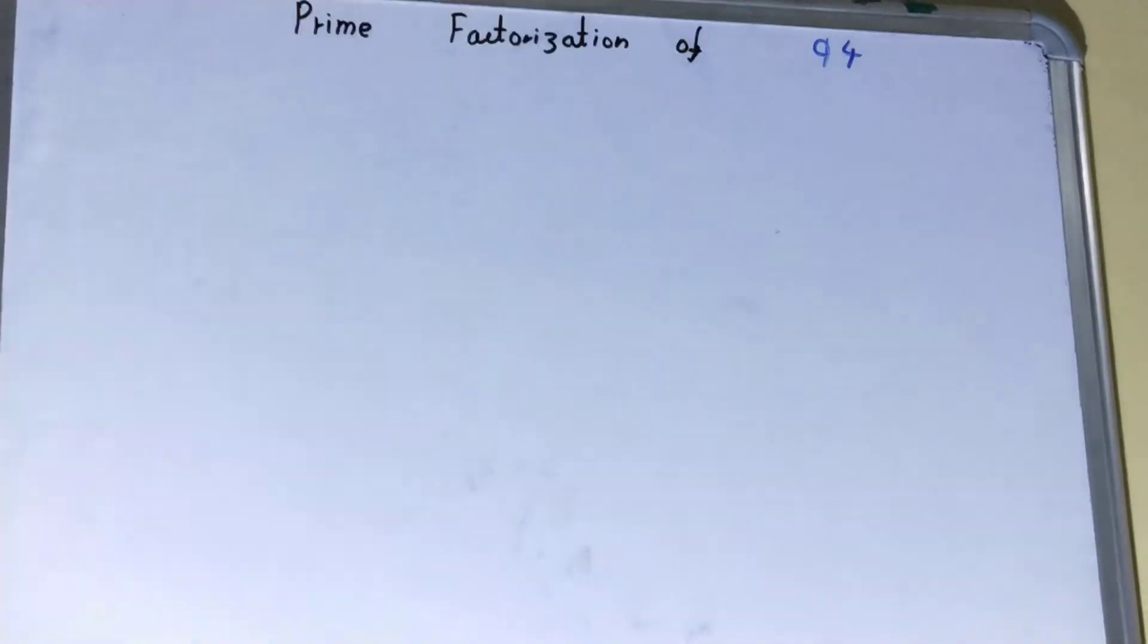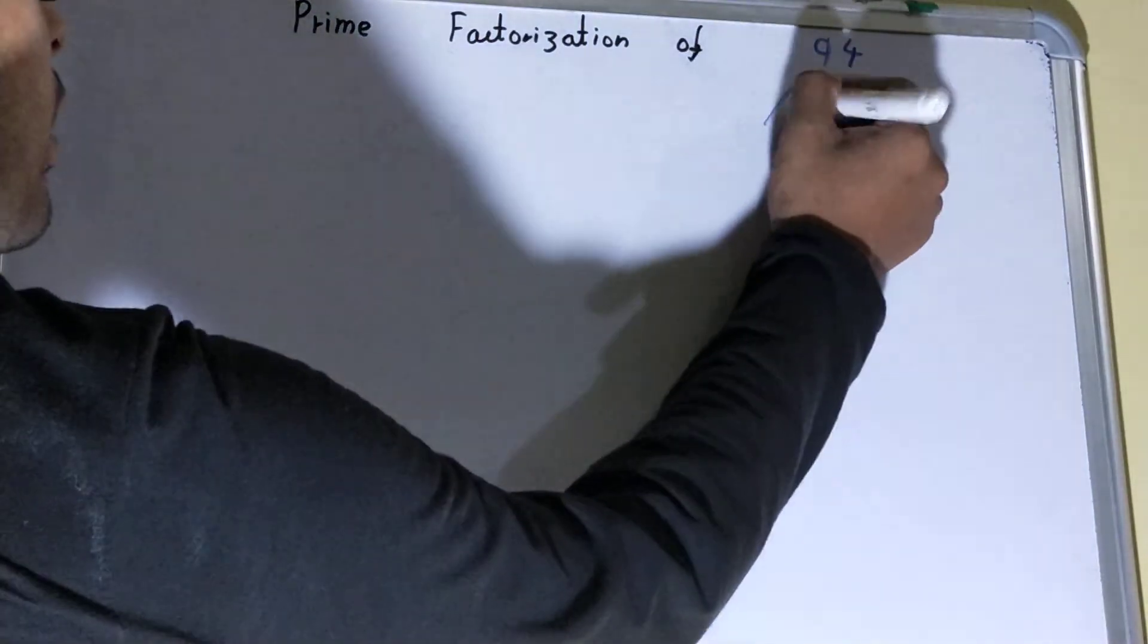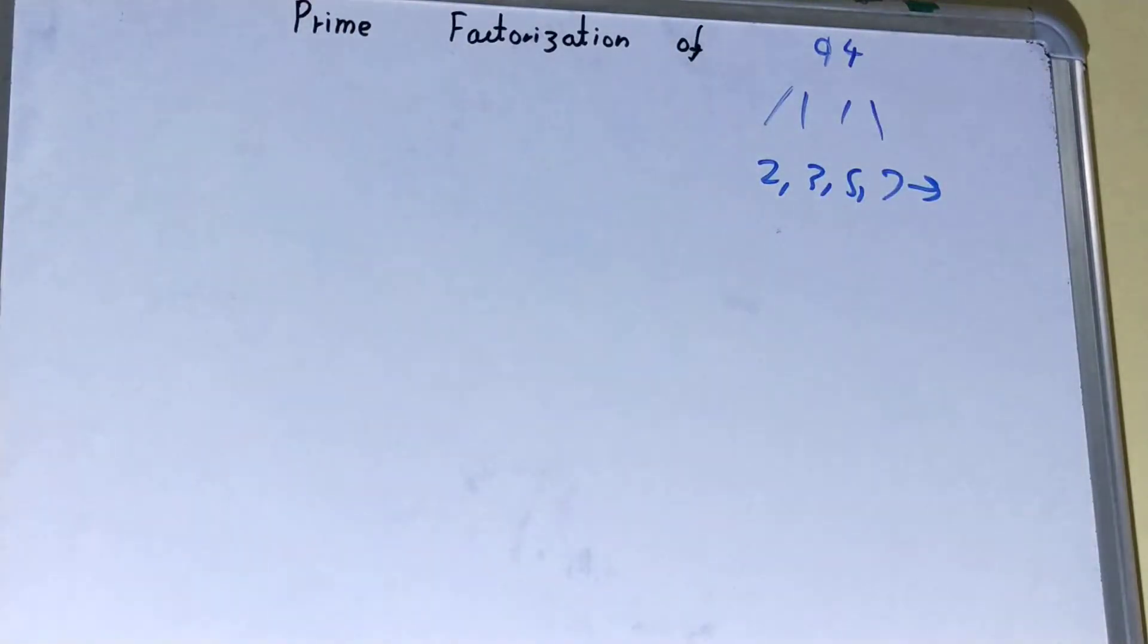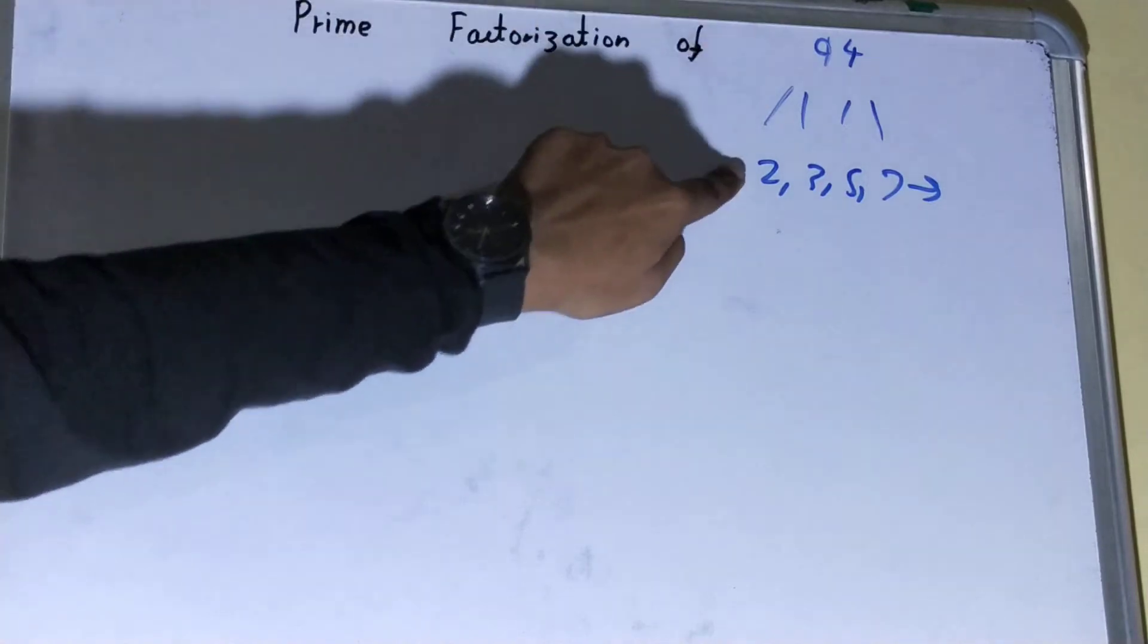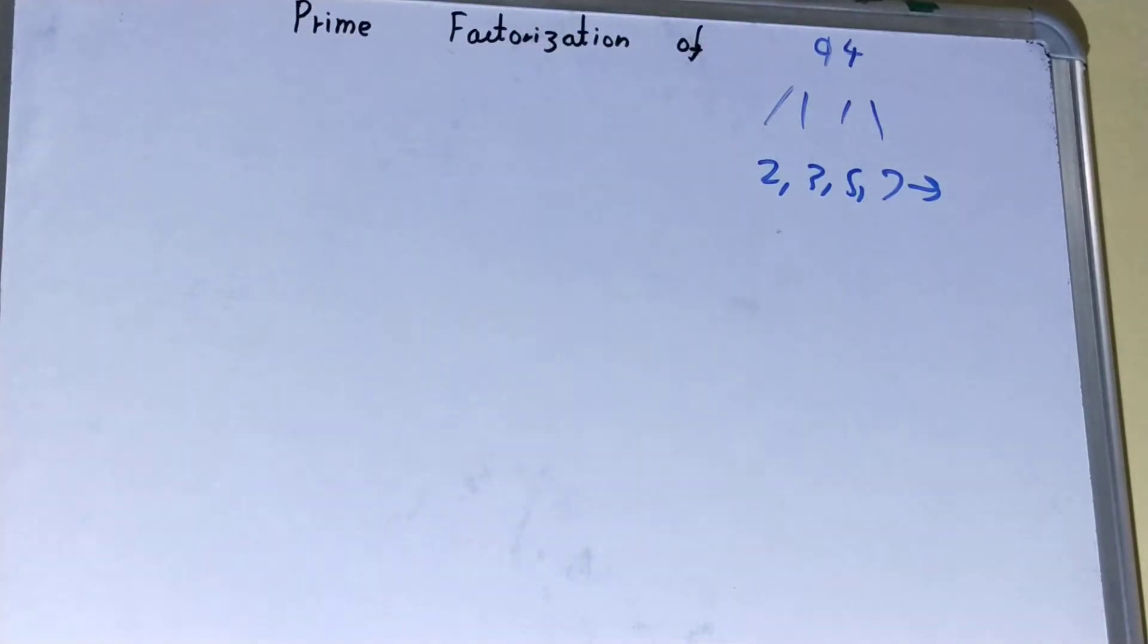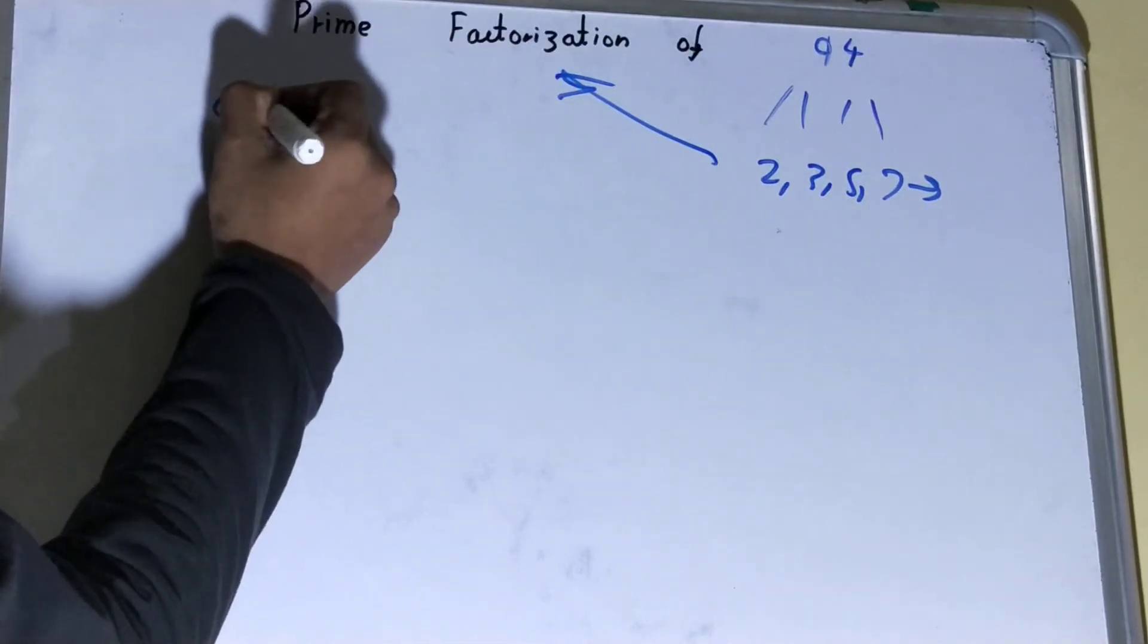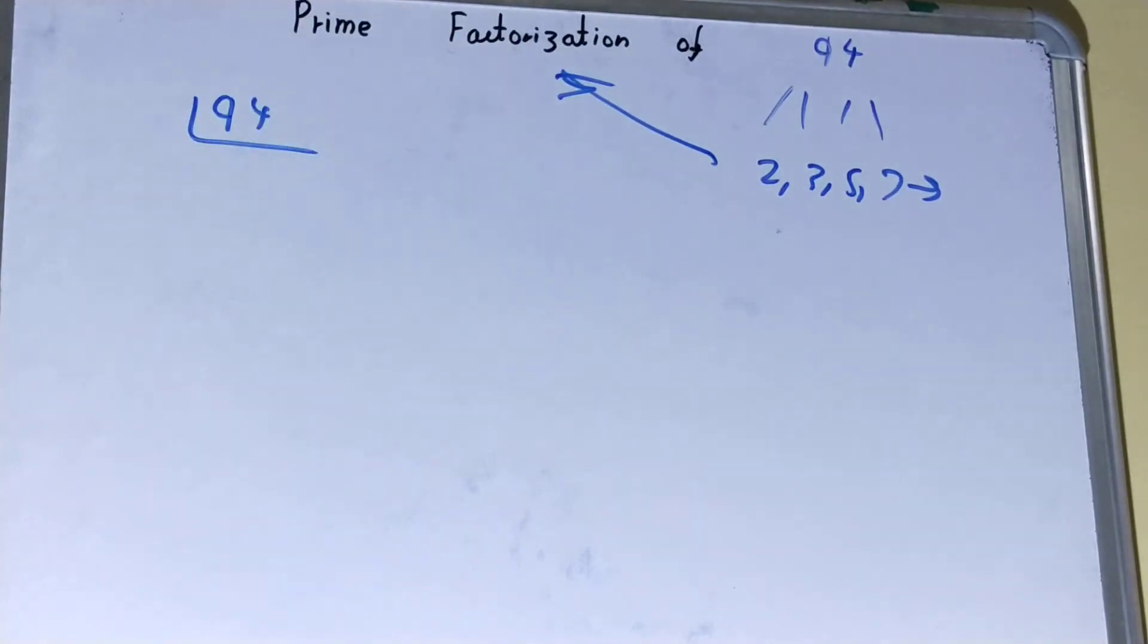So we need to factorize this 94 into a group of primes like 2, 3, 5, 7, and so on. The process of converting the number into a group of primes or set of primes is called prime factorization. Now let's quickly prime factorize this 94. We'll start with the lowest prime number we have, that is 2.